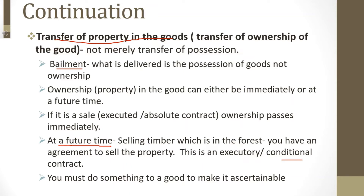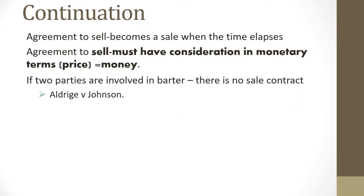To emphasize: when it comes to a contract for sale of goods, money must be in the picture. A barter trade does not form a contract for sale of goods. The case of Aldrich v Johnson establishes the key principle that consideration does not have to meet the exact value of the good — as long as it is sufficient for the purpose of the transaction, it qualifies as a sale of goods contract.